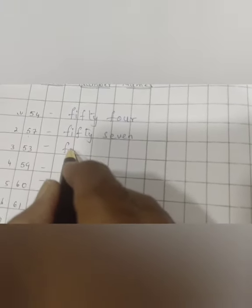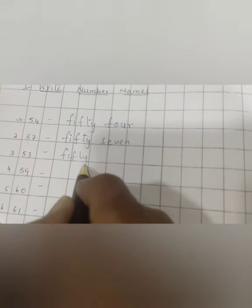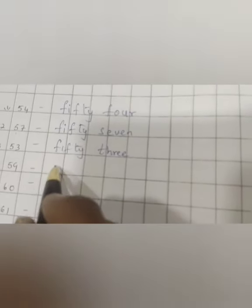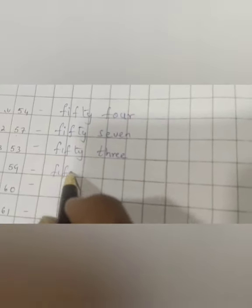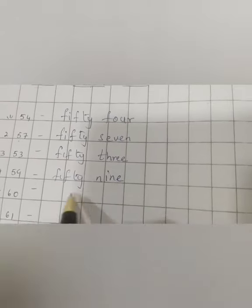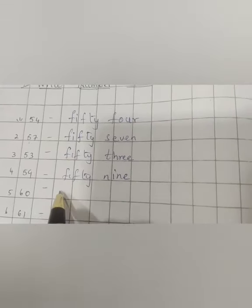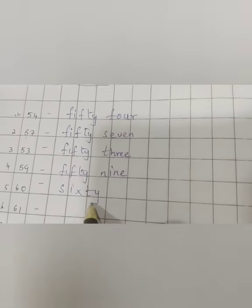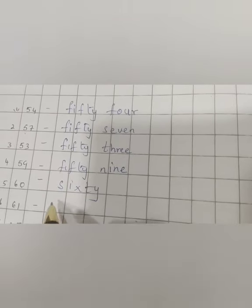F-I-F-T-Y, 50, T-H-R-E-E, 3. 53. What is the next number? 59. F-I-F-T-Y, 50, N-I-N-E, 9. What is the next number? 60. S-I-X-T-Y, 60.